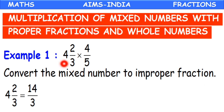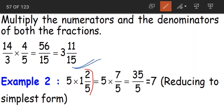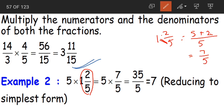That was a mixed fraction multiplied by a proper fraction. Now coming to example 2: 5 into 1⅖. Here 5 is a whole number and 1⅖ is a mixed fraction. The first step is to convert this mixed fraction into an improper fraction: 5×1 is 5, plus 2 is 7, divided by 5. So 1⅖ equals 7/5.